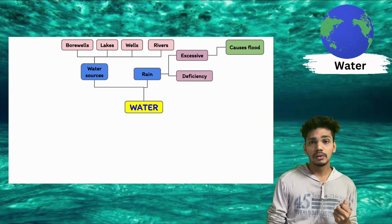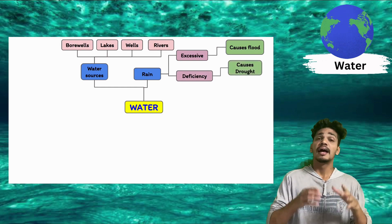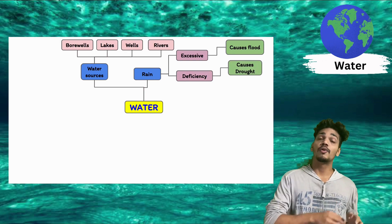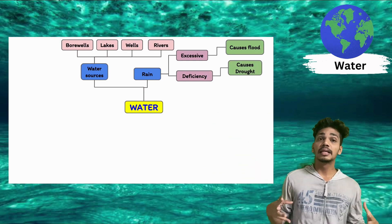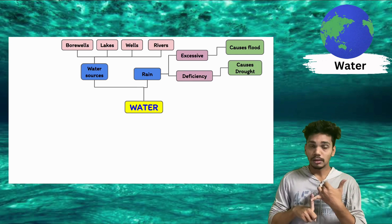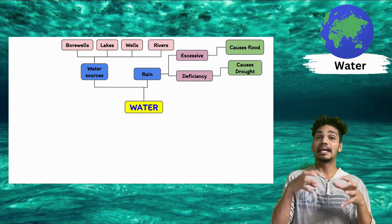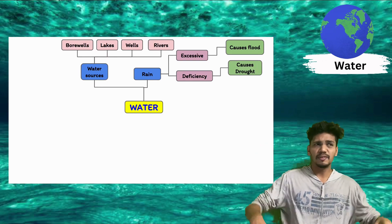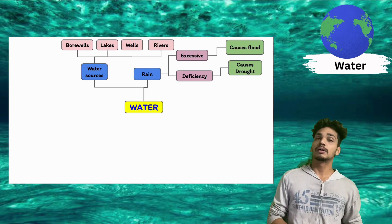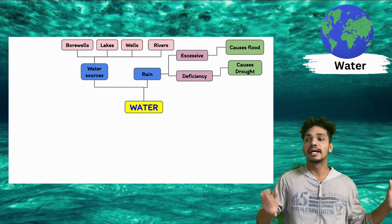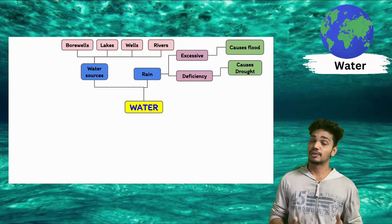And if there is deficiency, definitely it causes drought. So drought - if there is a lack of water or scarcity of water for more than six months to a few years, then there is a condition where there is no water. There is no plantation properly. And because of no vegetation, no animals can survive over there. Definitely humans can arrange something, but animals can't. So scarcity of water for a longer period of time is known as drought.